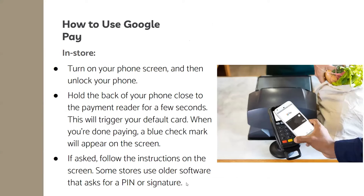Here's how to use Google Pay in store. Turn on your phone screen, unlock your phone, and hold the back of your phone close to the payment reader for a few seconds. This will trigger your default card. Once you're done paying, a blue checkmark will appear on the screen. If asked, follow the instructions on screen — some stores use older software that asks for a PIN or signature.